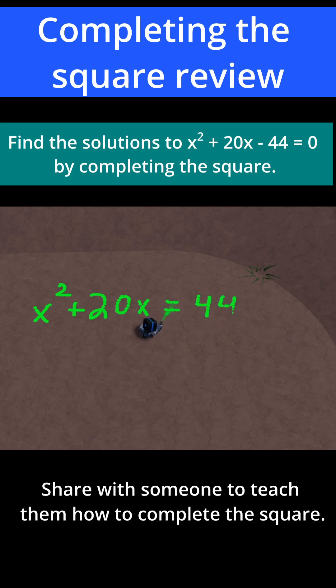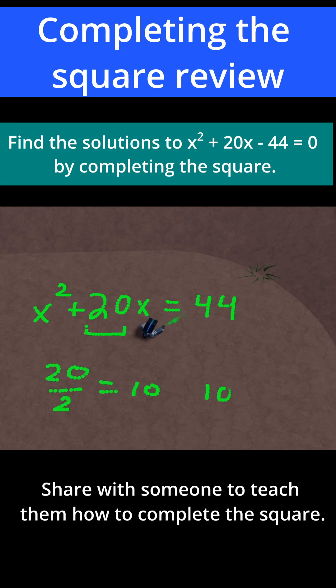Now let's complete the square. To complete the square, take the coefficient on the x, which is 20, divided by 2 — that's just 10 — and then take the number you get and square it. So 10 squared equals 100, and 100 is the number we're going to add to both sides.